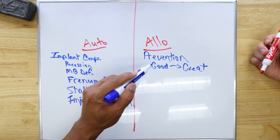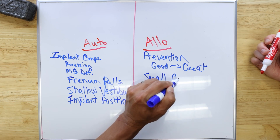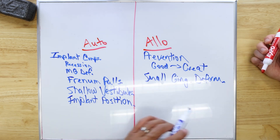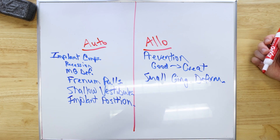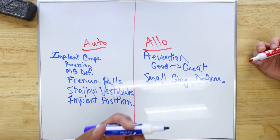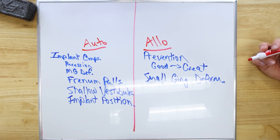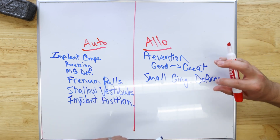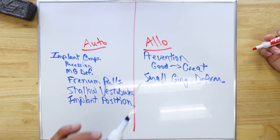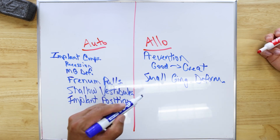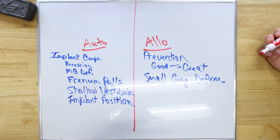Allografts are also good for small gingival deformities — if you have a weird little concavity on the facial or occlusal surface like we did in those implant cases. These are great for little changes. As far as timing goes, these are all good at the time of implant placement.